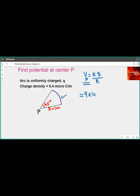So this equals 9 into 10 power 9 times the charge, which is nothing but the charge density multiplied by length of arc.